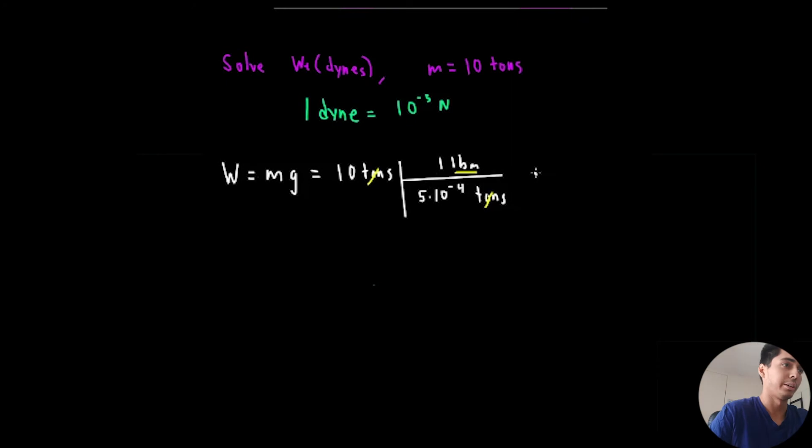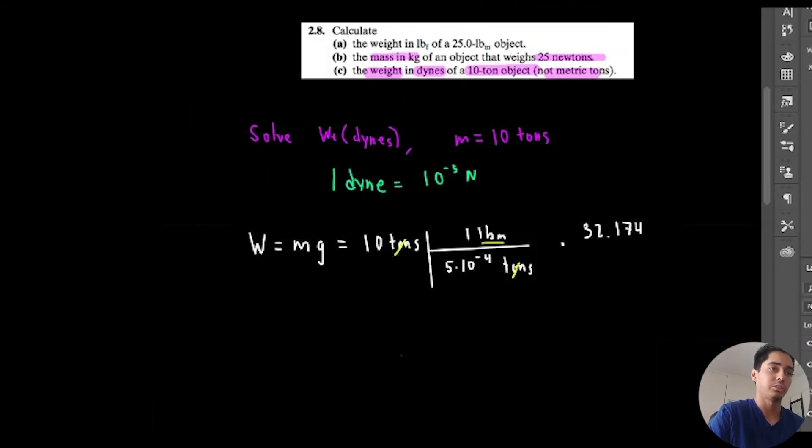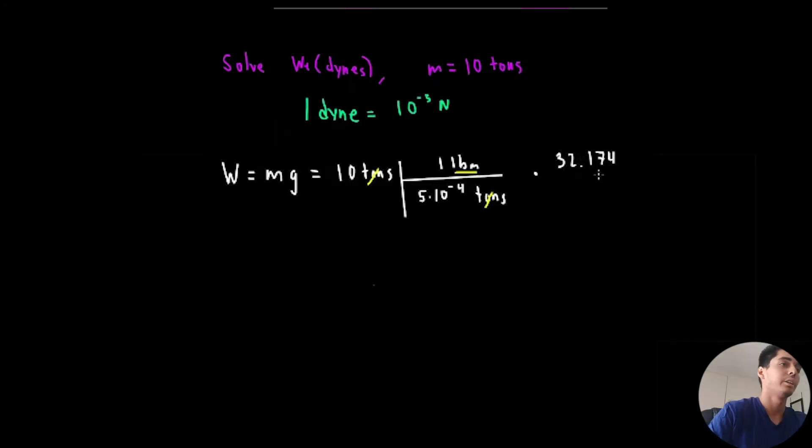Now we need to multiply by the gravitational constant. Times, what was it, 32.174. You know what, let me check the exact units, feet per second squared. 32.174 feet per second squared. So now we need to, since currently we're in pounds mass and we need to get dynes which is an SI unit.